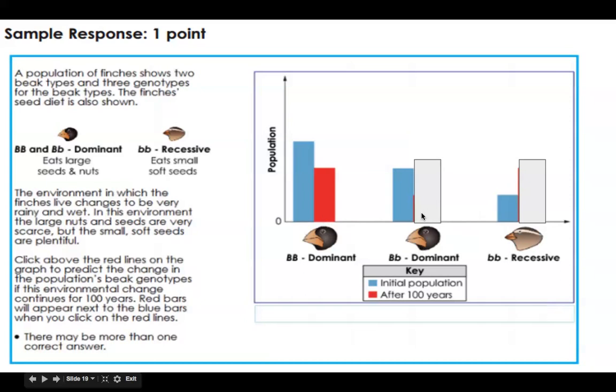This bird, again, same thing. It eats the large seeds and nuts, which are not as common. So its population should also decrease. And I've shown it decrease by at least a unit here. Again, you could have had it come to here, here, here, as long as you had it above zero.